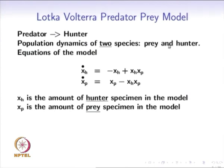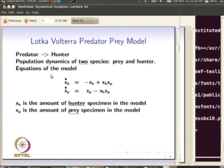Even though the word predator is commonly used, we will use hunter to denote the predator species. We have two species here: one is the prey and one is the hunter. The equations we have already seen look like this. At any time instant, x is the amount of hunter specimen and xp is the amount of prey specimen. We will see how, for a certain initial condition, the solution looks.